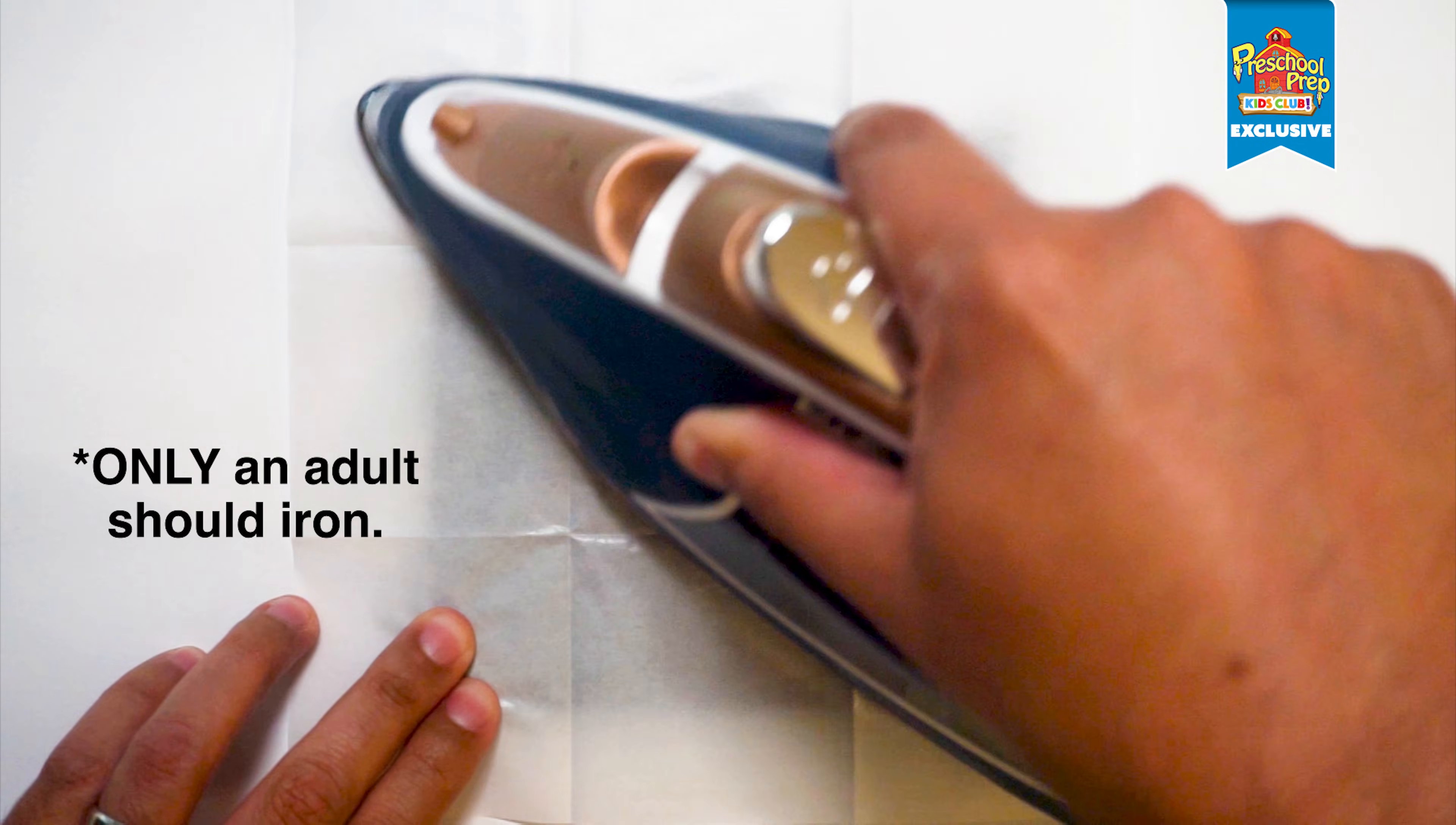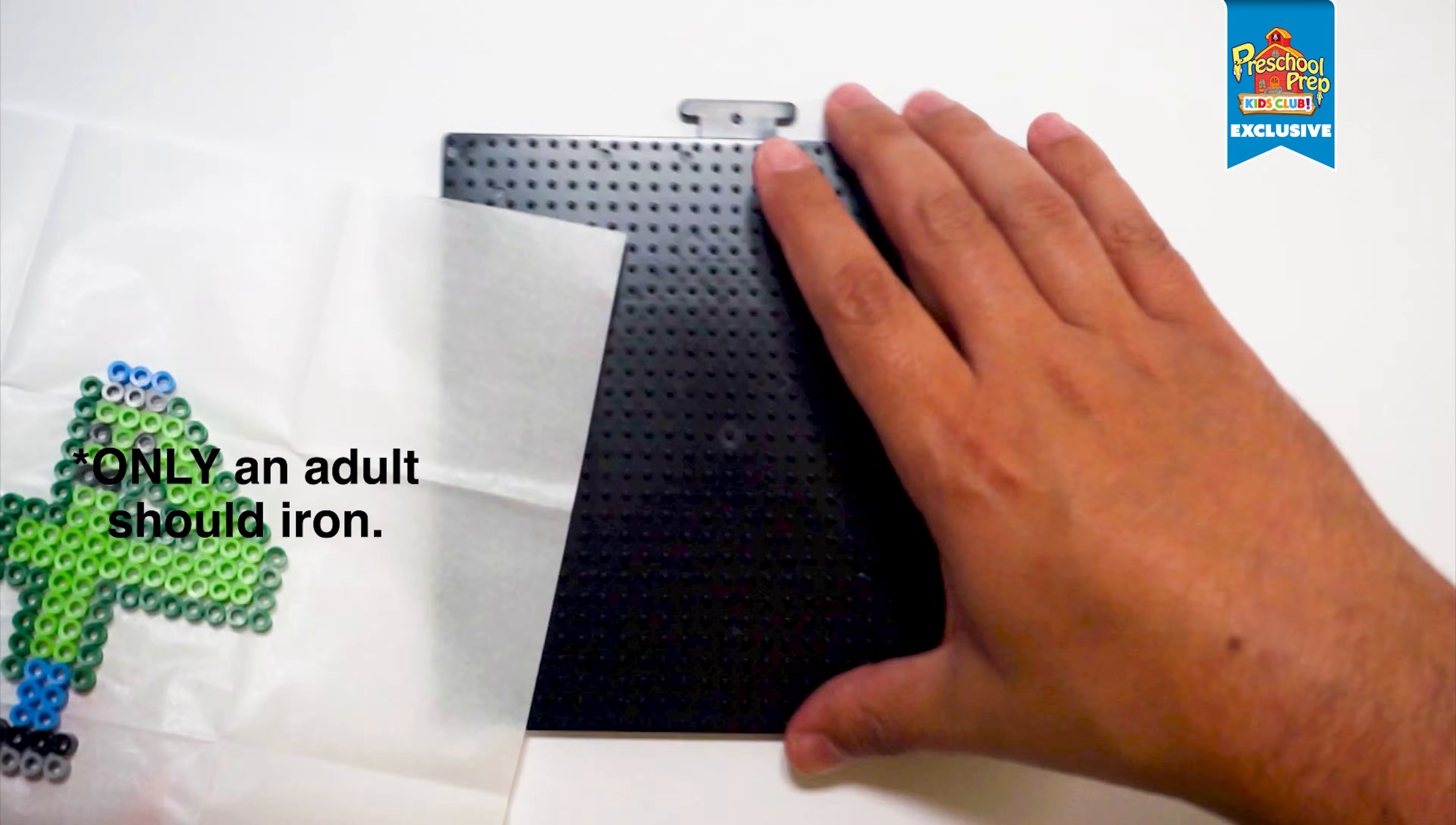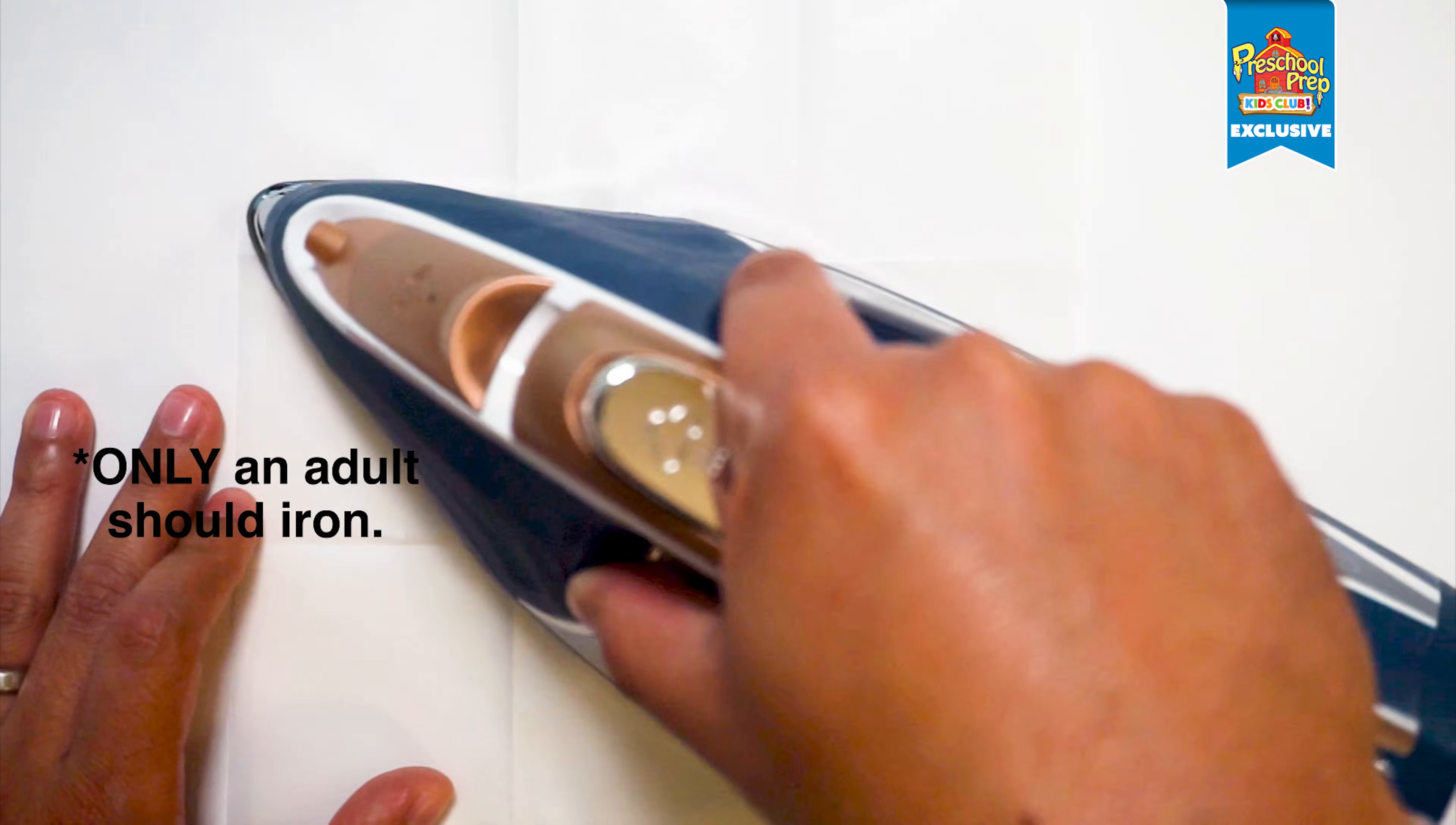They're gonna use the iron at medium heat, and use circular motions for about 10 to 20 seconds on each side.